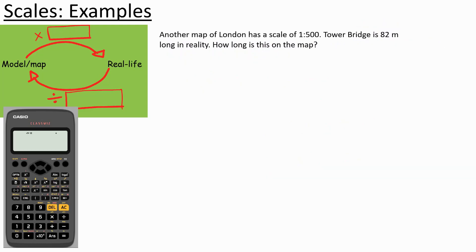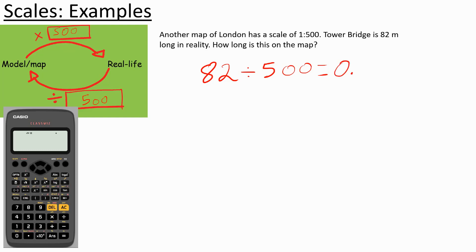Another map of London has a scale of 1 to 500. Tower Bridge is 800 metres long in reality — how long is this on the map? To go from real life to the model we divide by 500. So 800 divided by 500 gives 0.164 metres. Converting that into centimetres by multiplying by 100 gives 16.4 centimetres on the map.